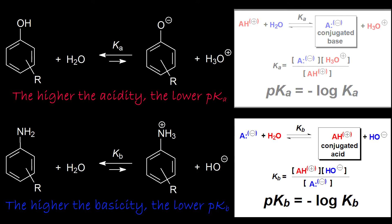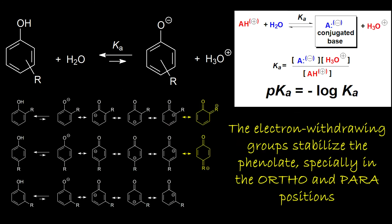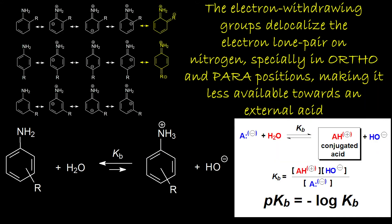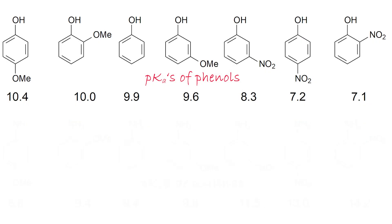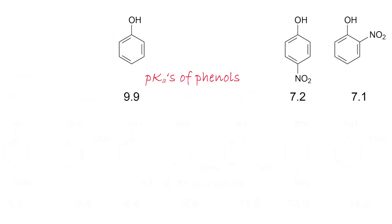Then it follows that the electron-withdrawing groups on the ring will be able to delocalize the phenolate negative charge. They will make it more stable, Ka will be higher, and the corresponding phenols will be more acidic. On the contrary, those same electron-withdrawing groups will pull the nitrogen-electron lone pair of aniline towards the ring, making it less prone to react with an external acid, and therefore rendering the aniline less basic. Let's start our thorough study by the phenols and by the extreme pKa values.